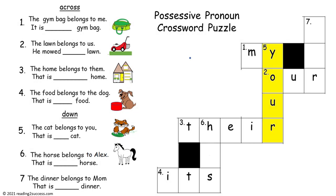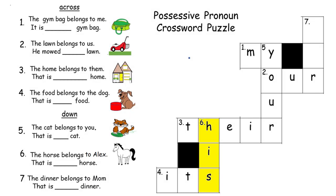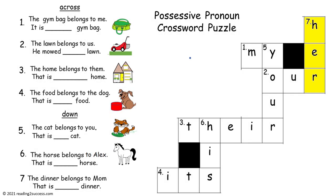The next clue is five down — the cat belongs to you. That is __ cat. The answer is 'your.' That is your cat. The clue for six down: the horse belongs to Alex. That is __ horse. The answer is 'his.' That is his horse. And the last clue, seven down: the dinner belongs to Mom. That is __ dinner. The answer is 'her.' That is her dinner.